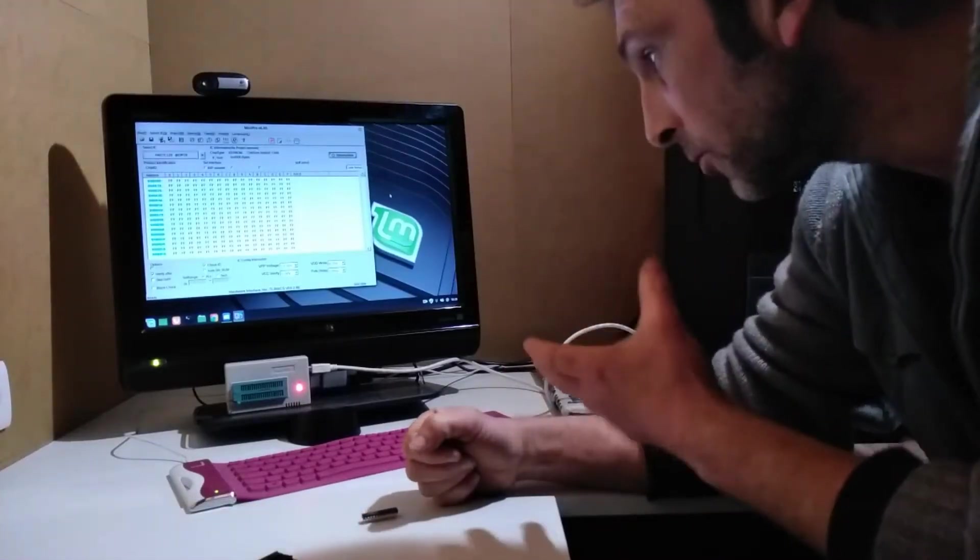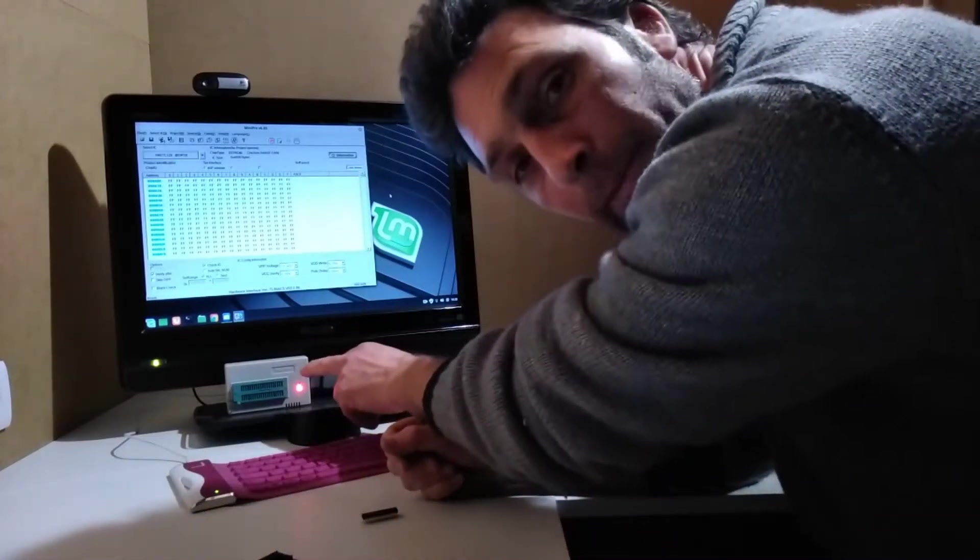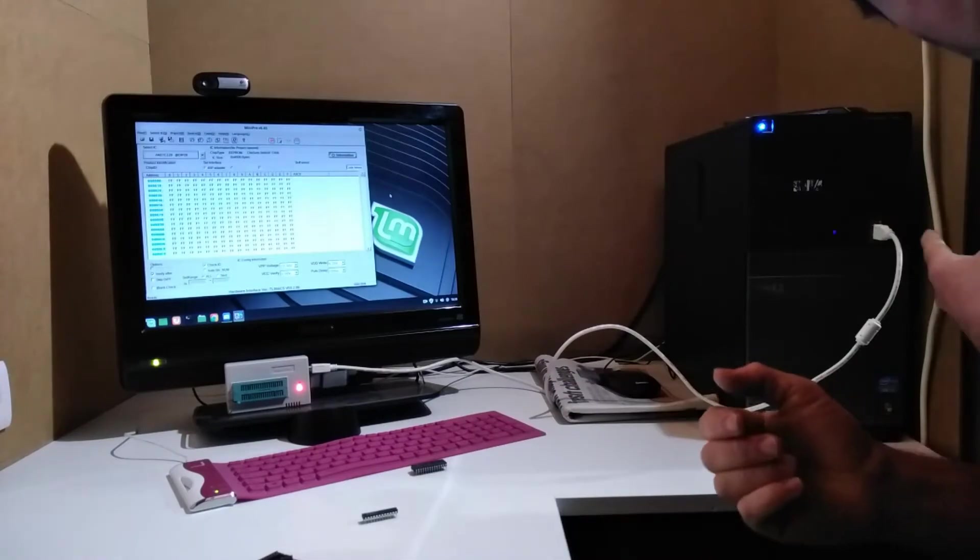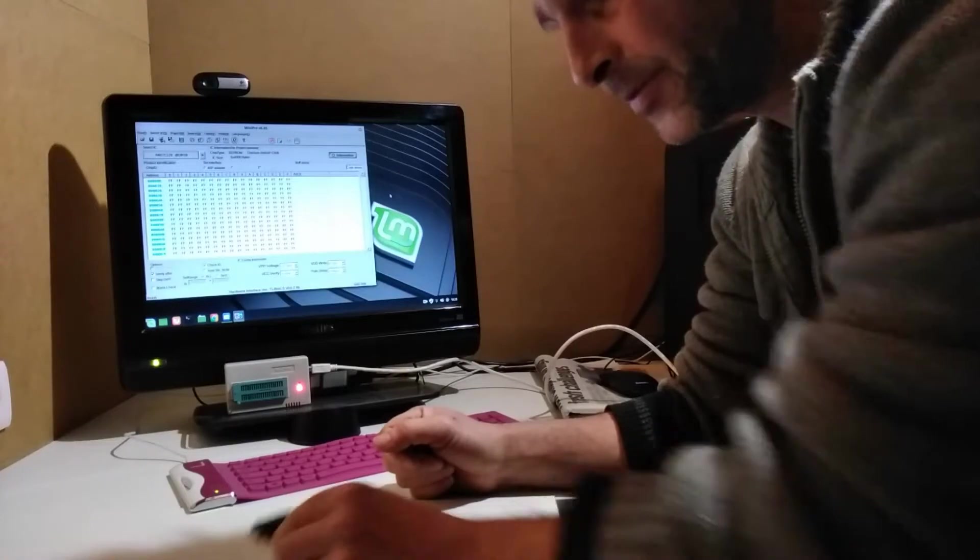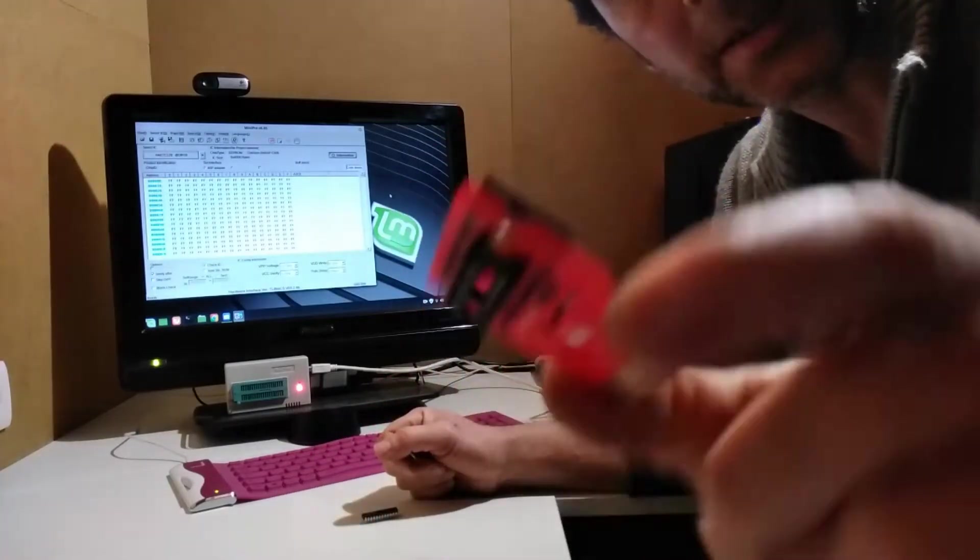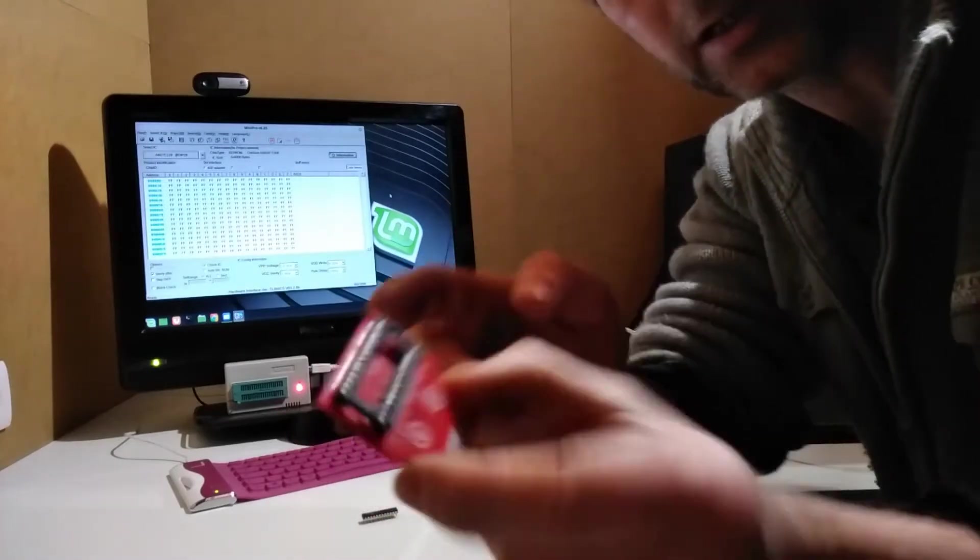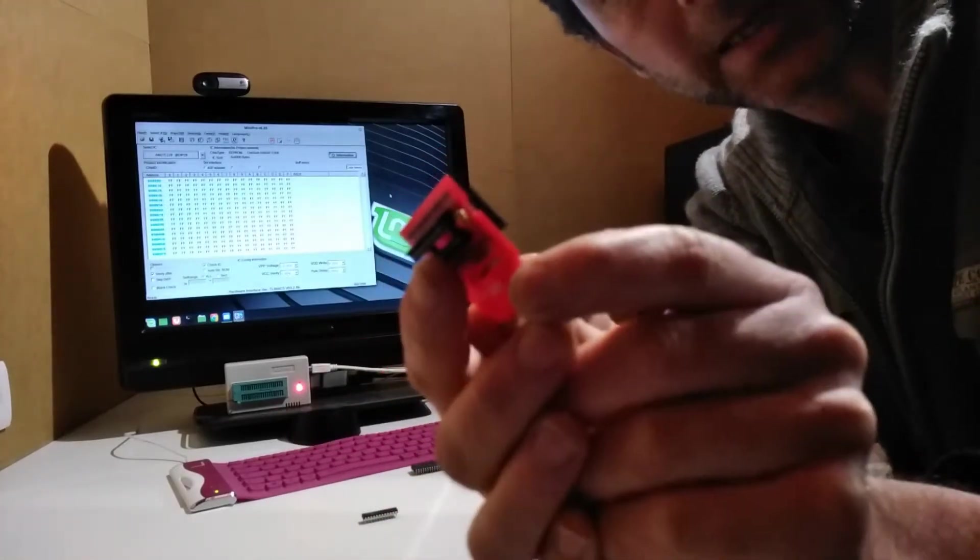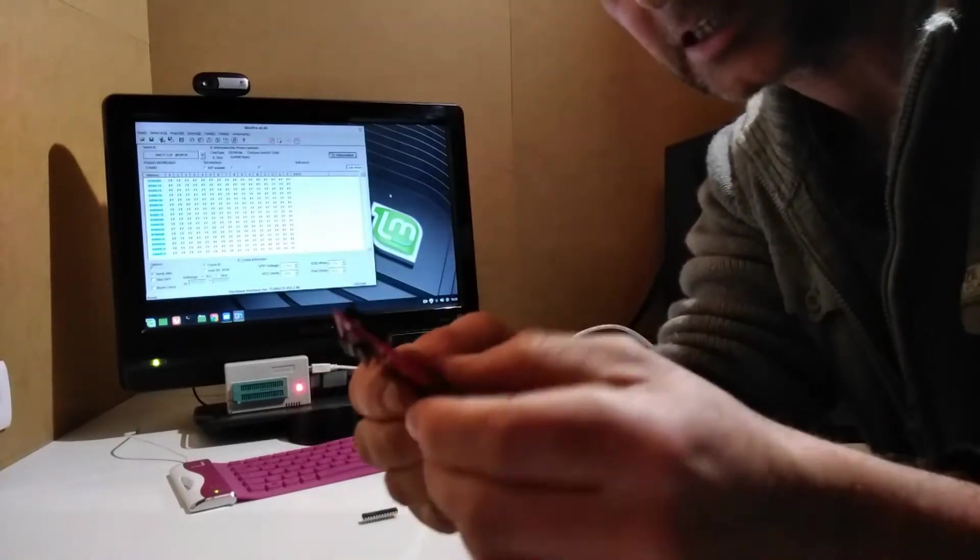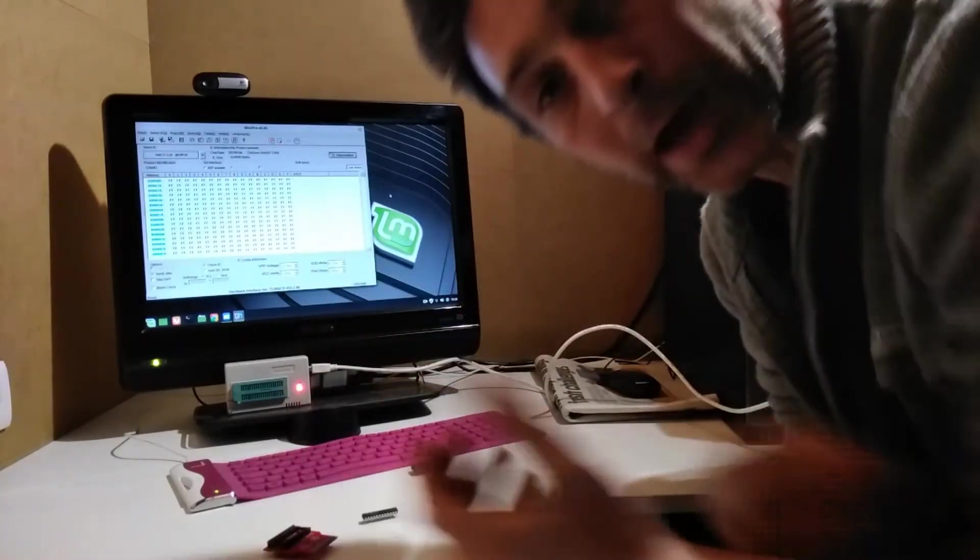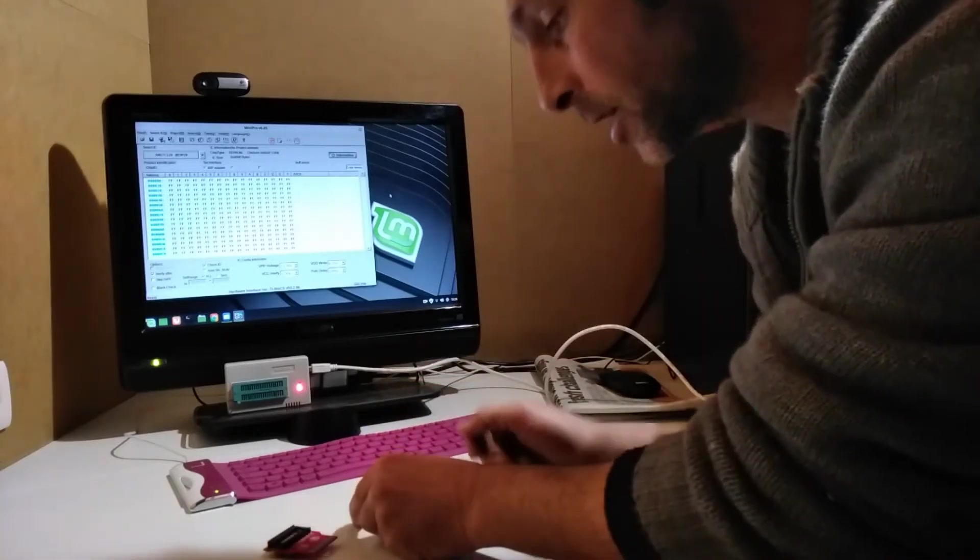So here I am at this weird awkward video angle at my computer. I've set up my Mini Pro programmer, just plugged it into the USB port, and I've started up my Mini Pro software. This here is the cartridge PCB that I've assembled. I put sockets on it so I could easily swap around the bank switch PLD and the ROM chip and try out different stuff on the Atari.